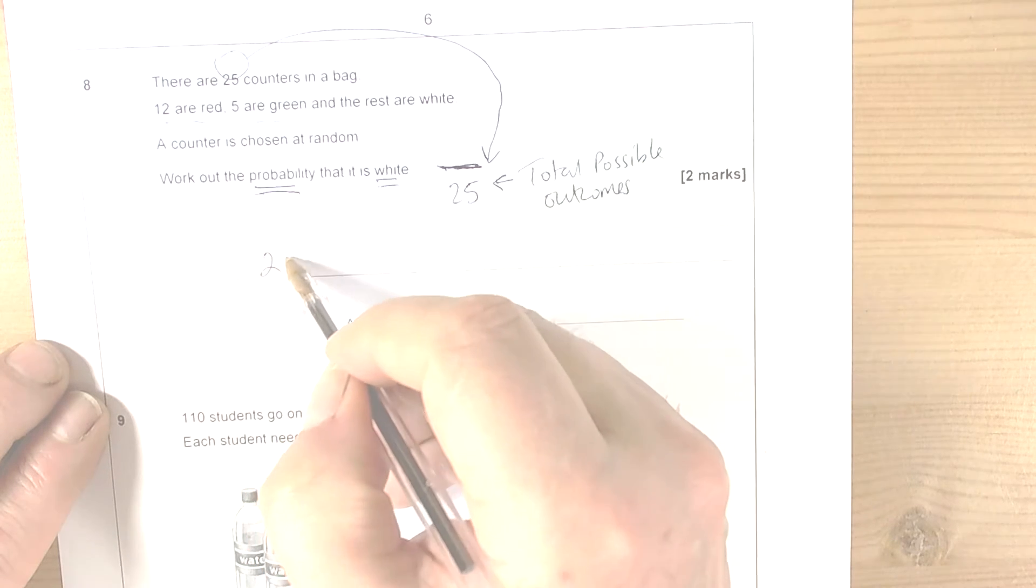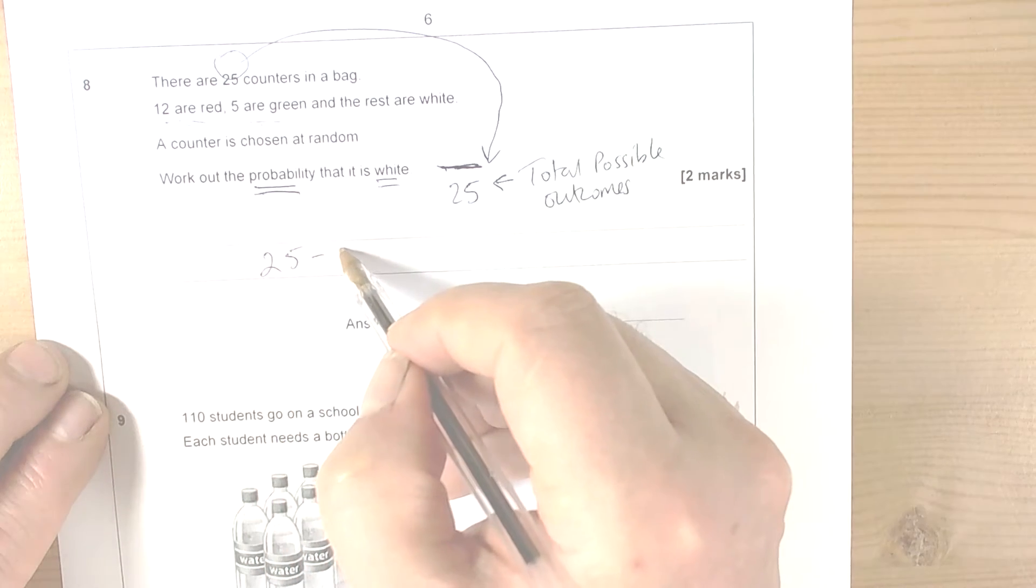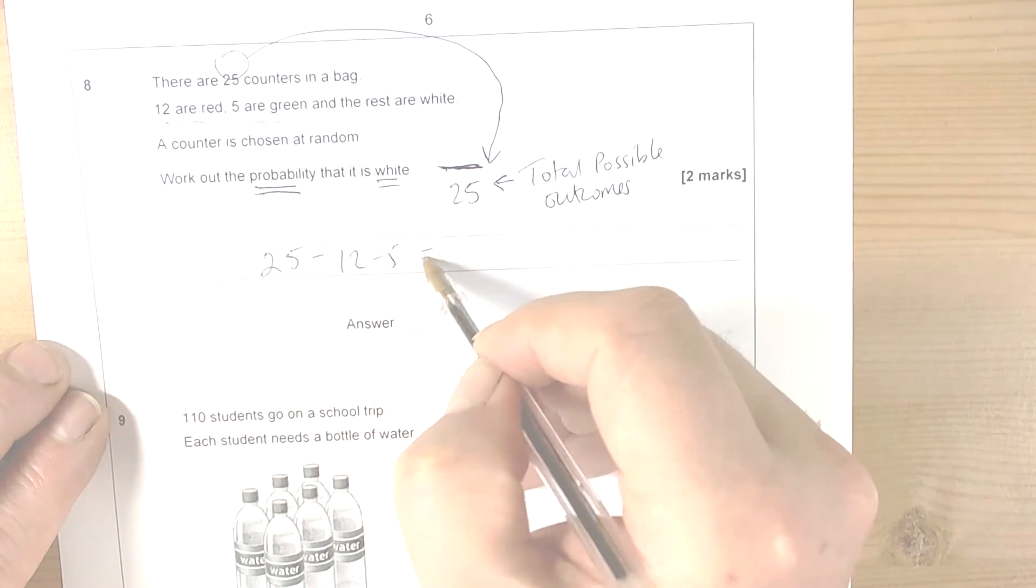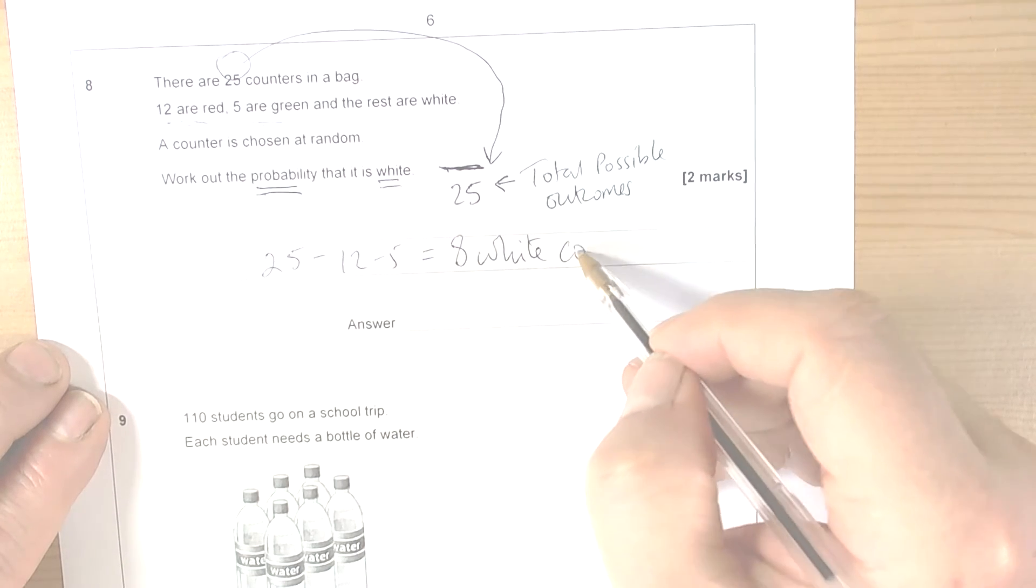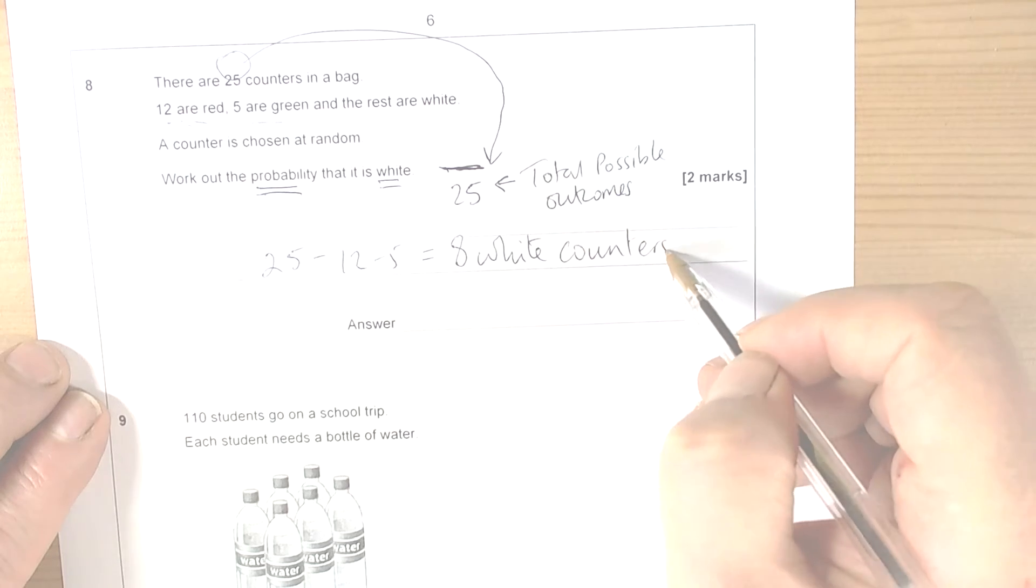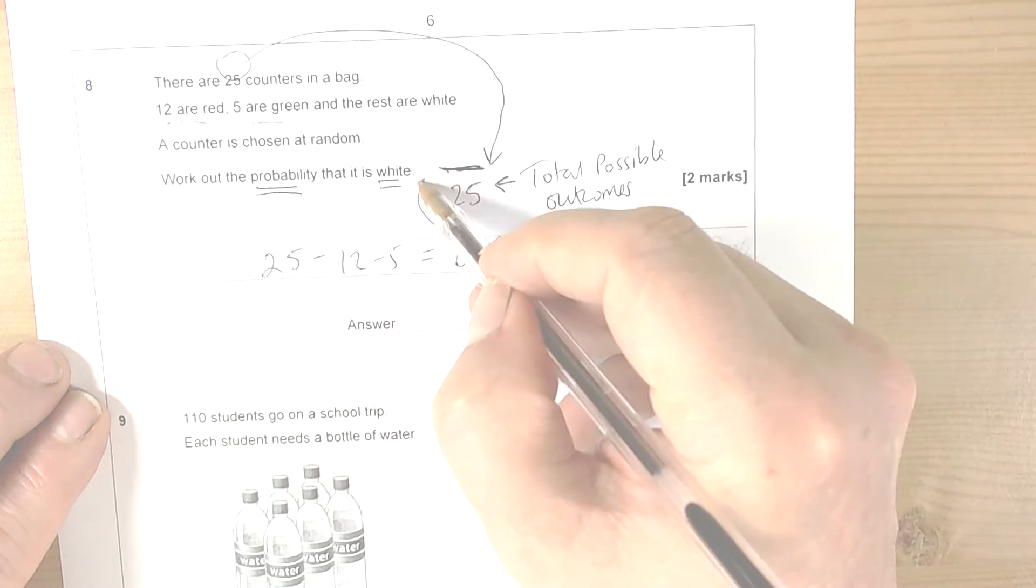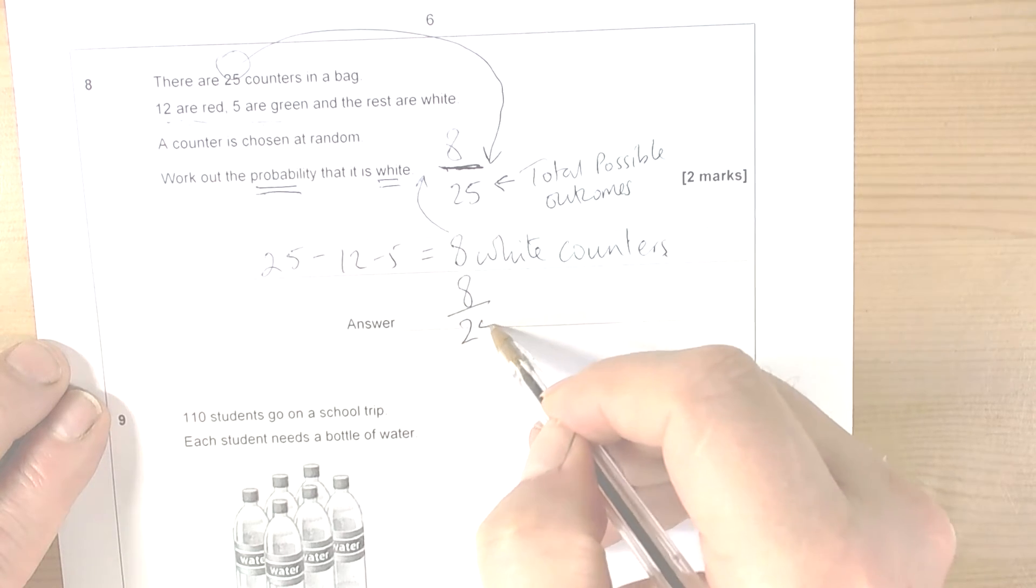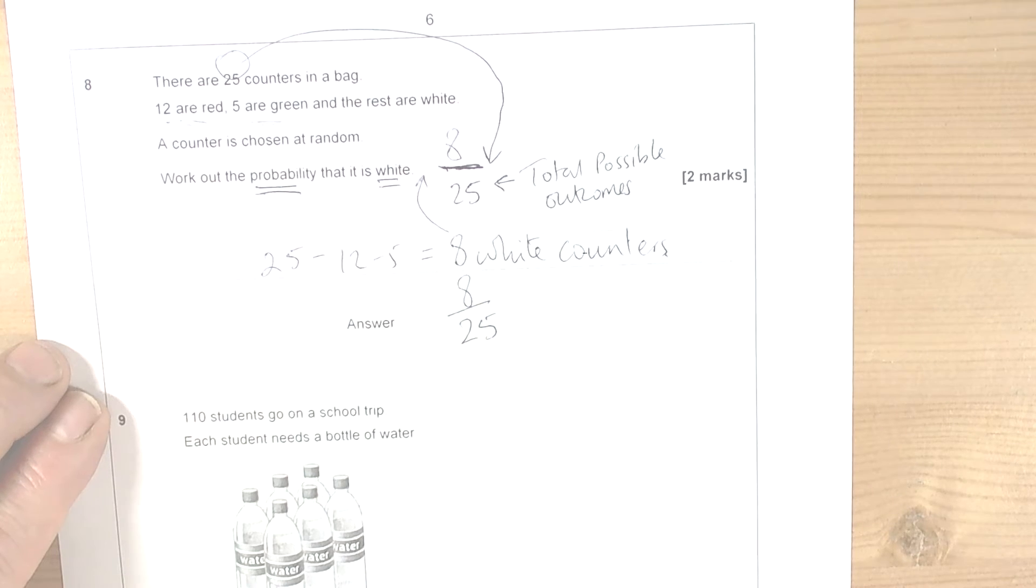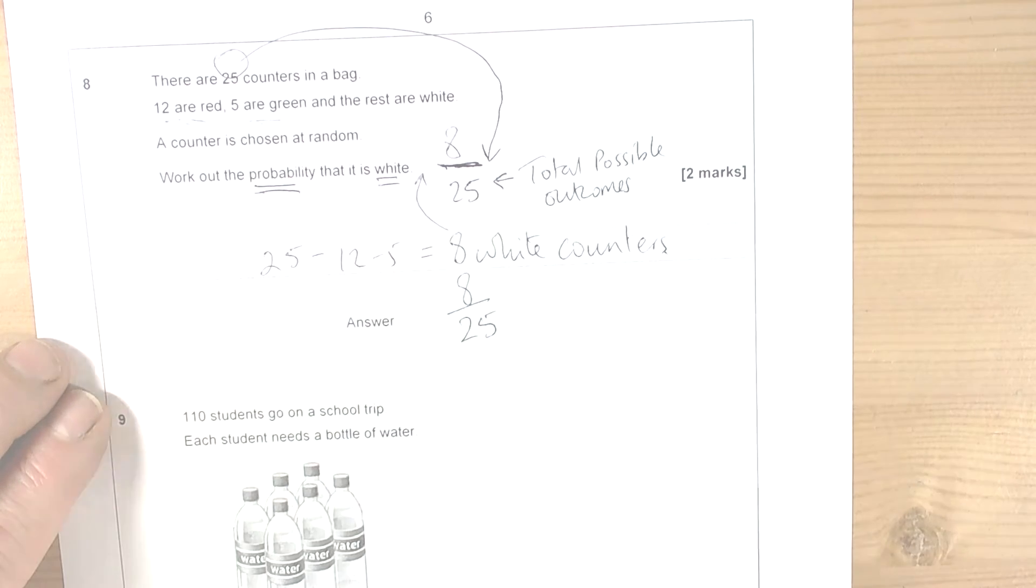So we have to do 25 take away the 12, take away the 5, and that tells us there were 8 white counters. So that's why the 8 goes on top. So the answer here then is 8/25. So there's a probability of 8/25. If we do it 25 times, we'd expect to choose 8 whites. That's what the probability is suggesting.